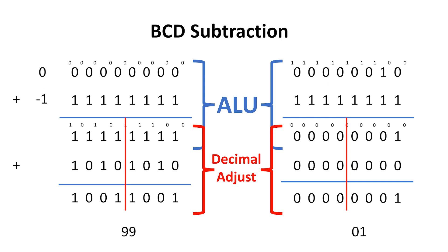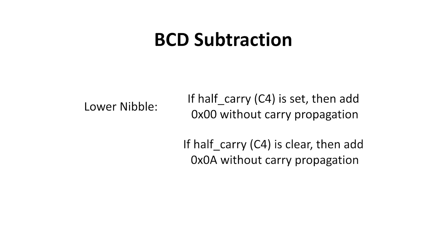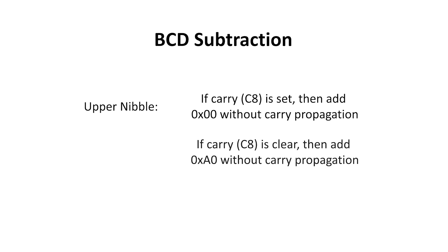For binary coded decimal subtraction, the rule for the lower nibble is that if half carry is set, I add 0 without carry propagation, but if it's clear, I add A. For the top nibble, if carry is set, then I add 0, and if it's clear, I add A0 hexadecimal.